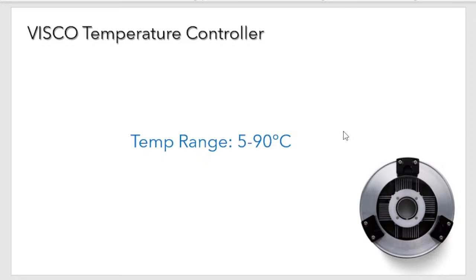The VSCO temperature controller is the main subject of today's webinar. It is important for maintaining your product at a specific temperature while taking readings — if the temperature changes, the properties of your product change, including viscosity. Keeping the sample temperature stable and at the right value is very important. The VSCO temperature controller has a temperature range of 5 to 90°C, which is sufficient to cover most confectionery needs.